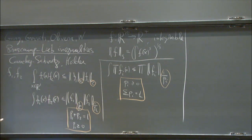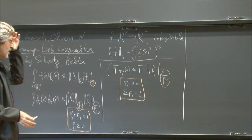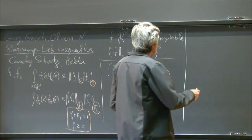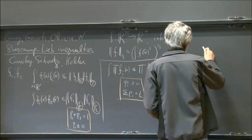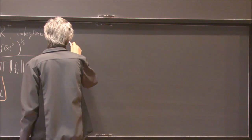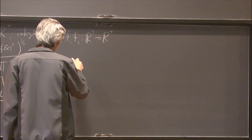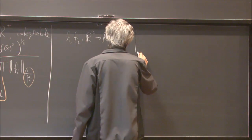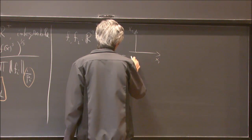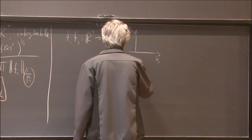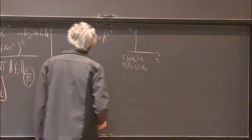Now I want to go up in dimension and do inequalities in higher dimensions. I'll do a trivial example first, then generalize in two directions. The inequality I want to start with is actually an equality. If we have functions in two dimensions, f1 and f2, and π1, π2 denote the projections — so π1(x1, x2) = x1 and π2(x1, x2) = x2 — then the integral of f1(π1(x)) · f2(π2(x)) is simply equal to the L1 norm of f1 times the L1 norm of f2.